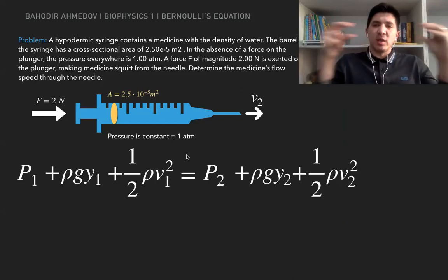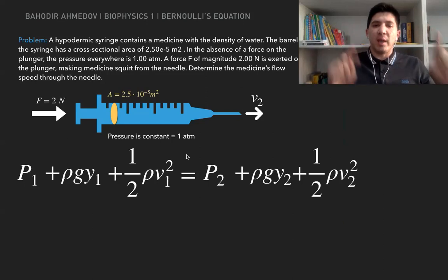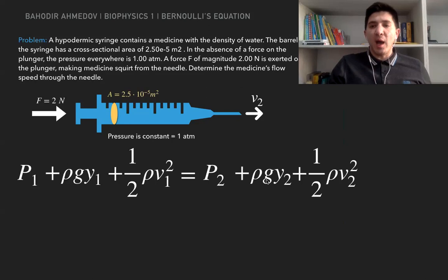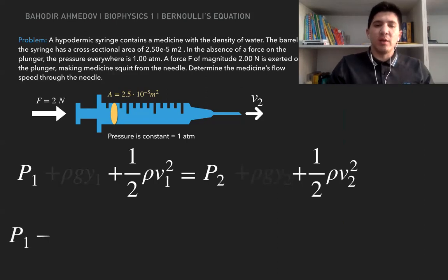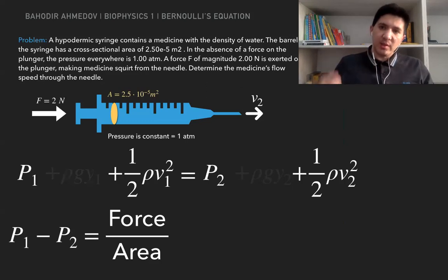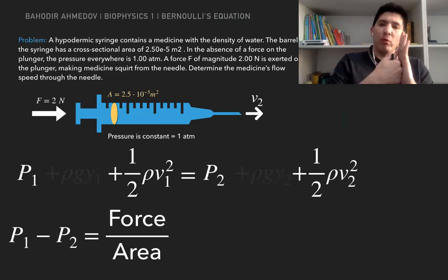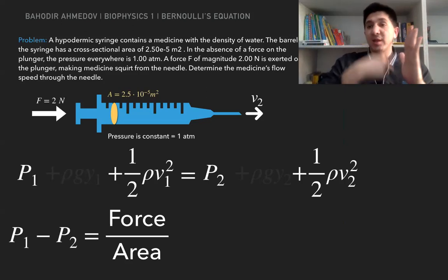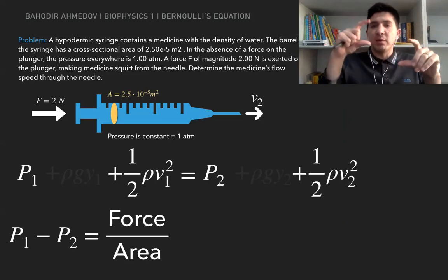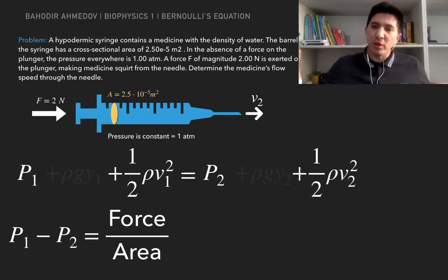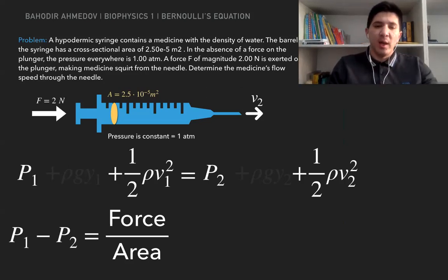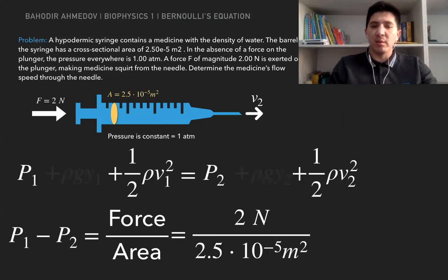Since the syringe is lying horizontally, y1 equals y2, so I can cancel those terms. The change in pressure P1 minus P2 is equivalent to force over area. The pressure is how much force you're applying per unit of area — if you apply more force, the pressure increases; if you apply the same force over a bigger area, the pressure decreases. The pressure is proportional to force and inversely proportional to area. Here the force is 2 Newtons and the area is 2.5×10⁻⁵ square meters, giving 8×10⁴ pascals.